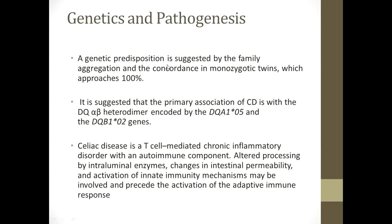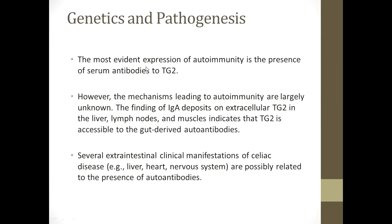Genetic predisposition is suggested by family aggregation and concordance in monozygotic twins, which approaches 100 percent. Celiac disease is a T-cell mediated chronic inflammatory disorder with an autoimmune component. The most evident expression of autoimmunity is the presence of serum anti-tissue transglutaminase. However, the mechanisms leading to autoimmunity are largely unknown. IgA deposits on extracellular TG2 in the liver, lymph nodes, and muscles indicate that TG2 is accessible to gut-derived autoantibodies.